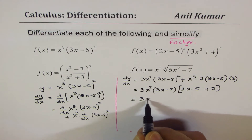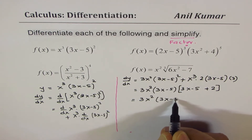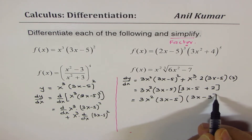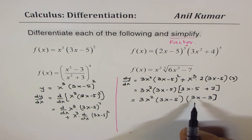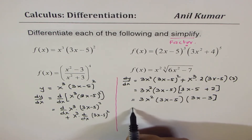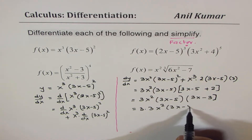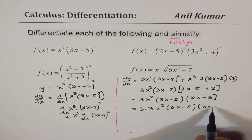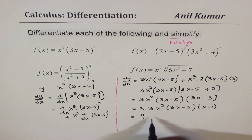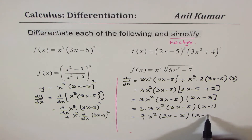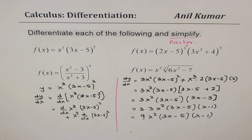Now we can combine. So we have 3x squared times 3x minus 5, and here we have 3x minus 3. Now 3 is again common, so we'll factor this 3 also. So that makes this 3 times 3, which is 9, x squared, 3x minus 5 times — we took 3 common — x minus 1. Now 3 times 3 is 9, x squared, 3x minus 5 times x minus 1. So go through these steps once again — see how in simple steps we are factoring the common factors and simplifying.